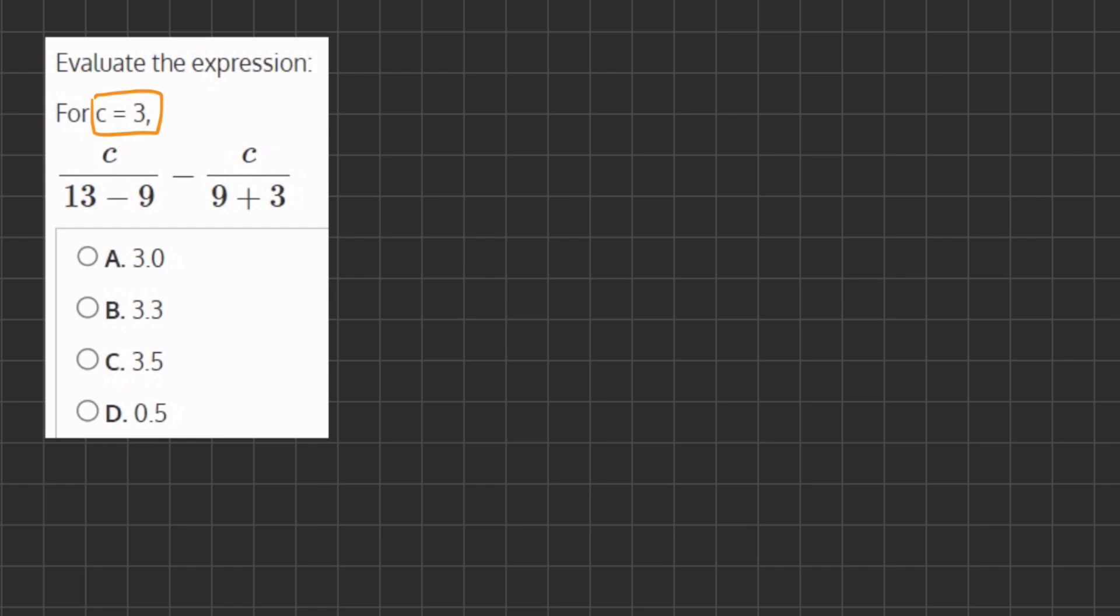So in our numerator of our first fraction, we are going to plug in 3 instead of c. And in our denominator, we have 13 minus 9, minus our second numerator, which is 3 instead of c, 9 plus 3 in our denominator.